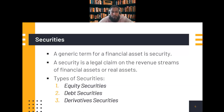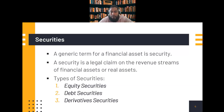Debt securities are based on a debtor-creditor relationship. If we buy a security issued by a company or government, it means the company owes us — they will pay us profit or interest, and we can redeem the security at any time or at maturity. Examples of debt securities are sukuk, bonds from a conventional perspective, or money market instruments.